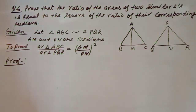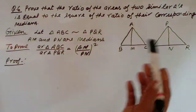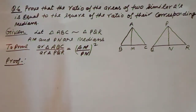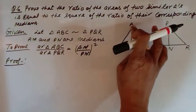Prove that the ratio of the areas of two similar triangles is equal to the square of the ratio of their corresponding medians. We have taken triangle ABC and triangle PQR — these two triangles are similar, and AM and PN are their medians. Median means BM = MC and QN = NR.